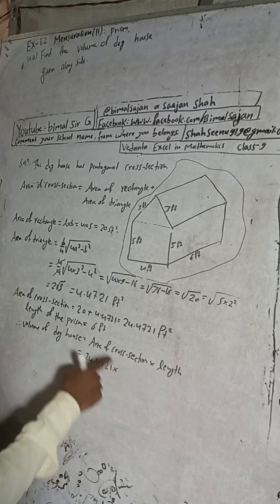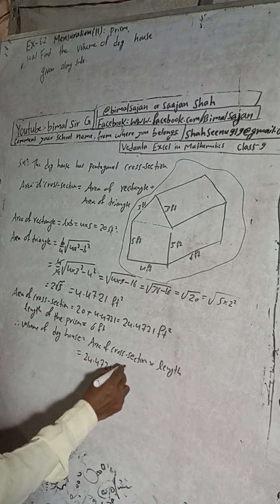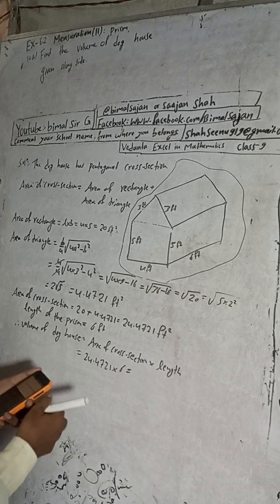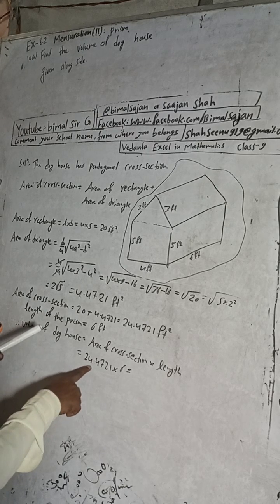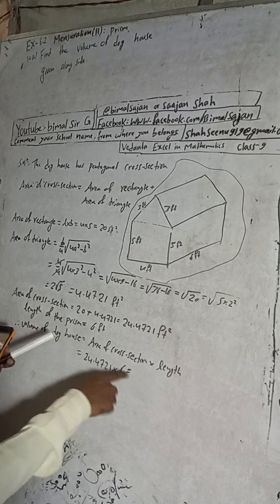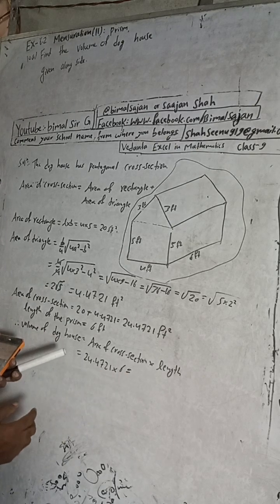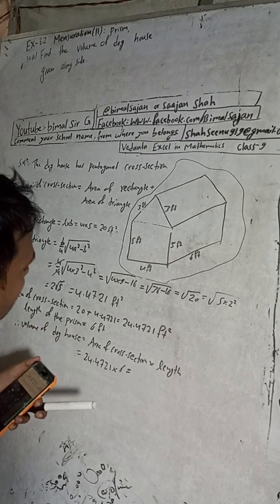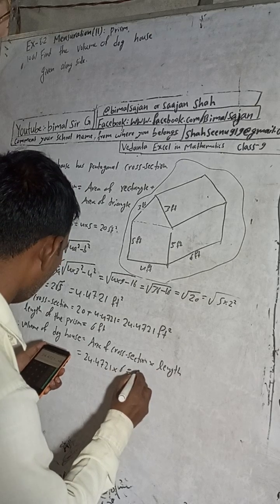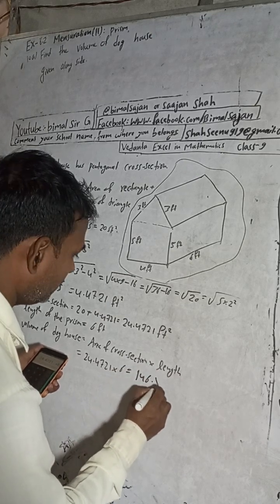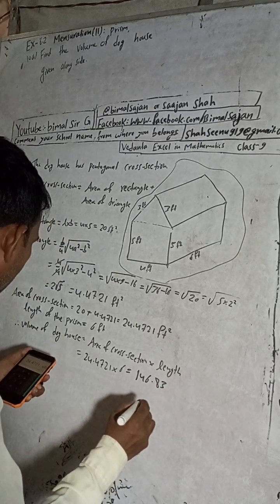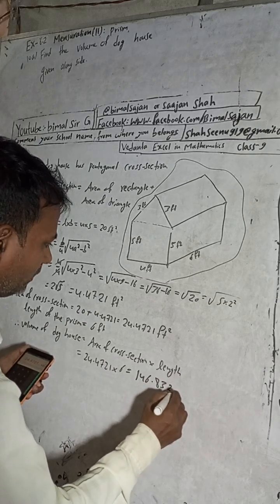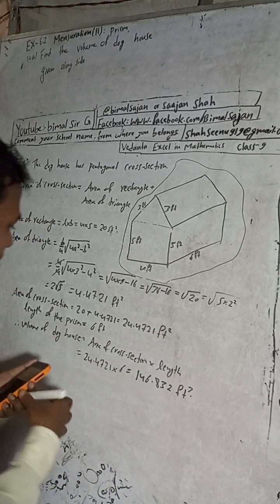Volume = 24.4721 × 6 = 146.83 cubic feet. So the answer is approximately 146.83 ft³.